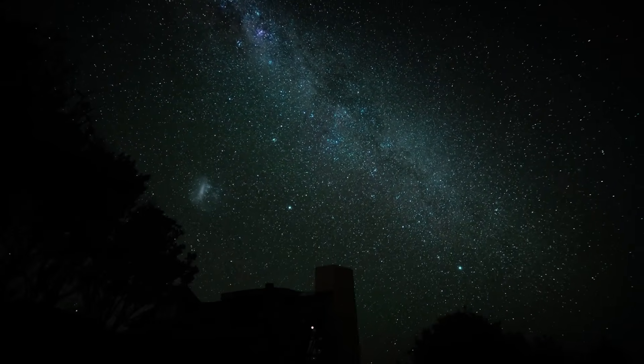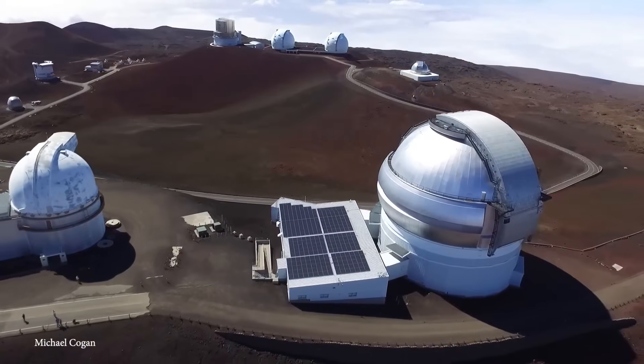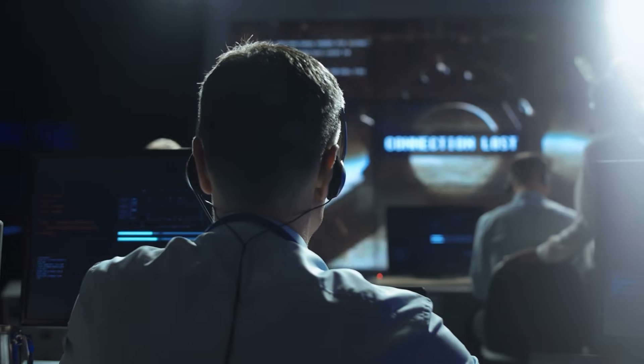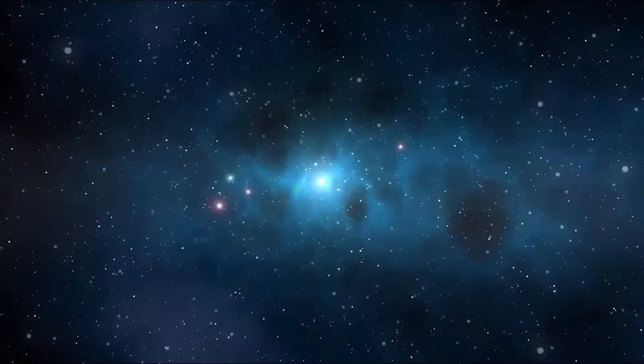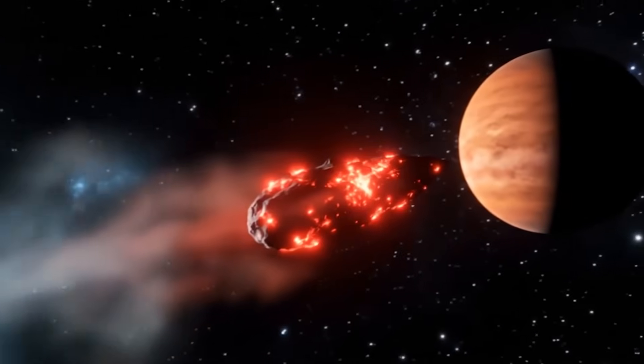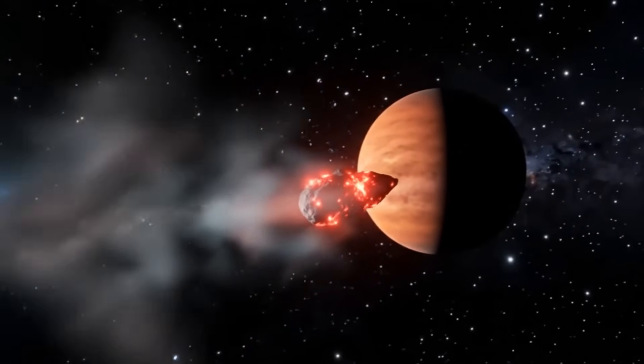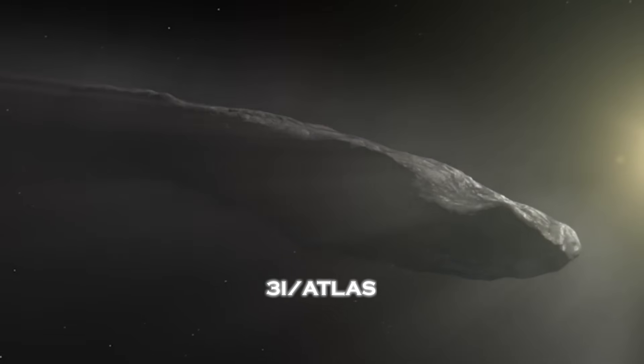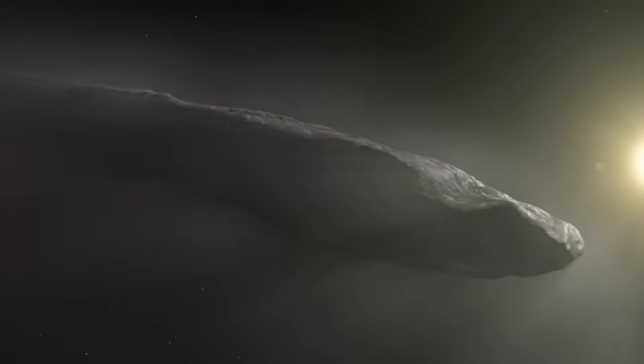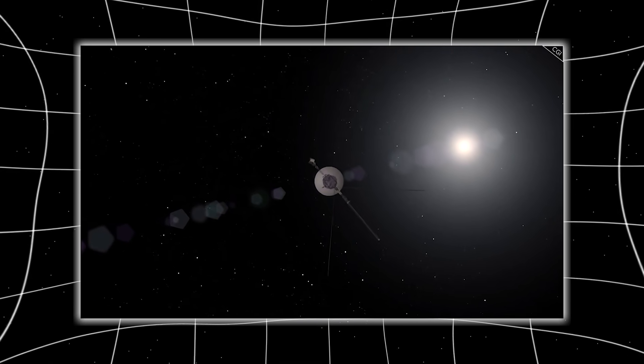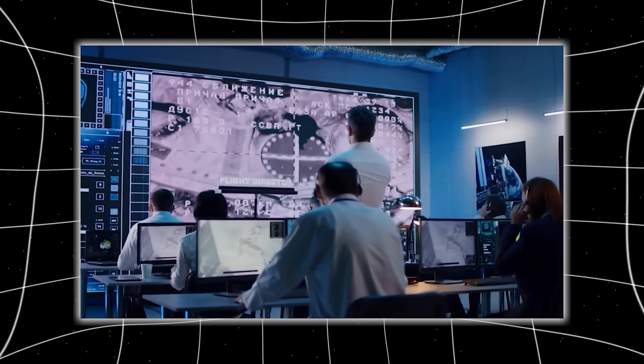What you're about to hear is no ordinary space update. Something just happened far beyond the reach of any Earth-bound telescope. An event so unexpected that it's forcing NASA scientists to question everything they thought they knew about interstellar encounters. A spacecraft launched nearly half a century ago, Voyager 1, has just been linked to an extraordinary attempt. An interception of an object not only alien to our solar system, but possibly alien in a much deeper sense. This object is none other than 3I Atlas, the third confirmed interstellar visitor. And what happened when Voyager 1 attempted to align with it is now echoing through mission control centers, classified reports, and even ancient history.